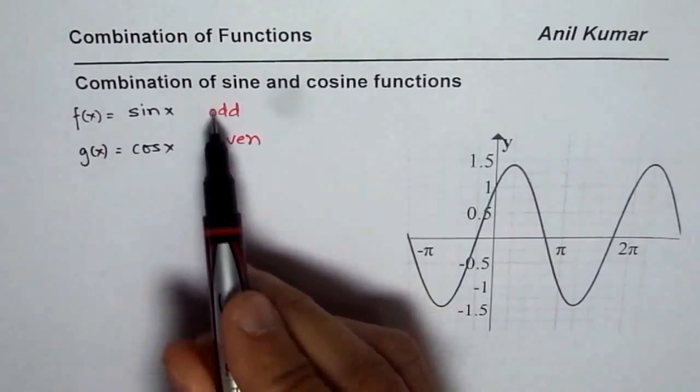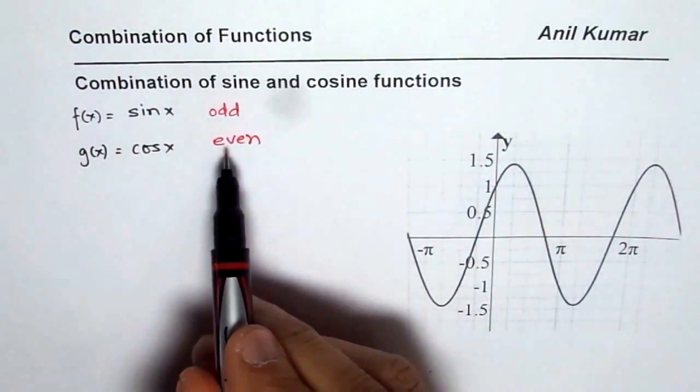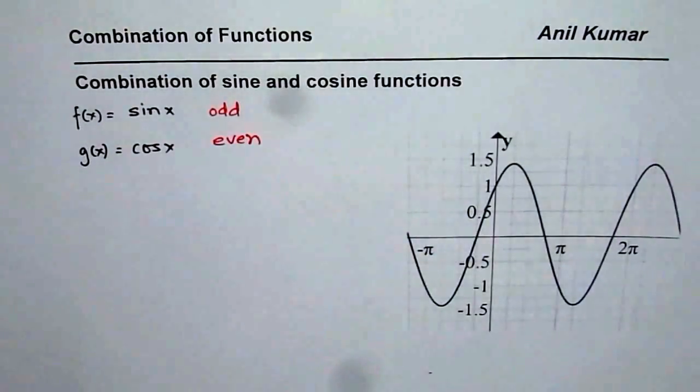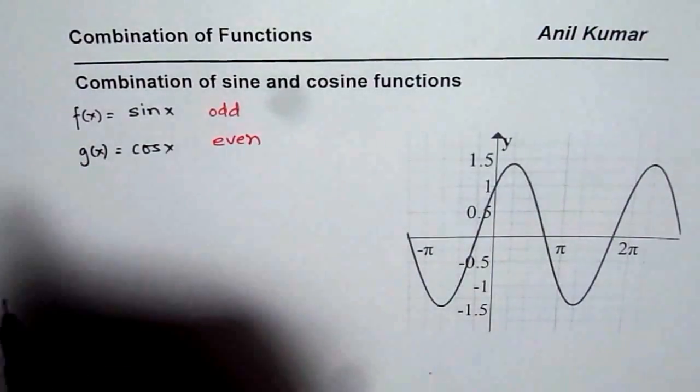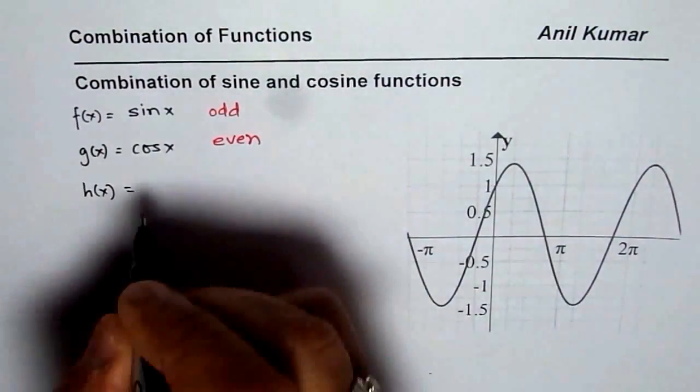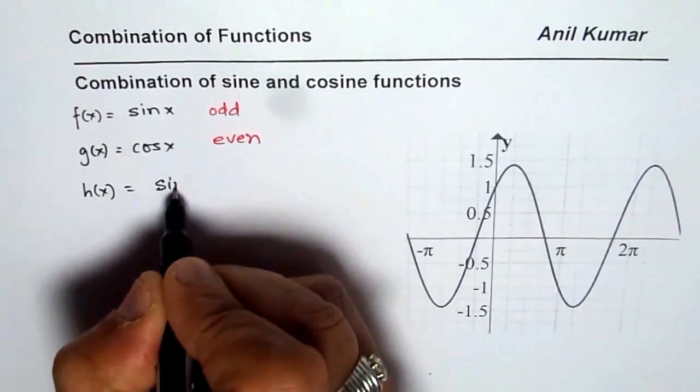And when we combine these functions, what should we get? If we combine these functions, we get neither odd nor even. That is important to understand. Now we will consider a function h(x) in this particular video, which is combination of these two. So let me write that function as sine x plus cos x.